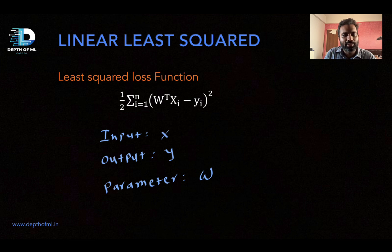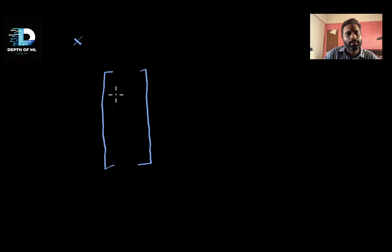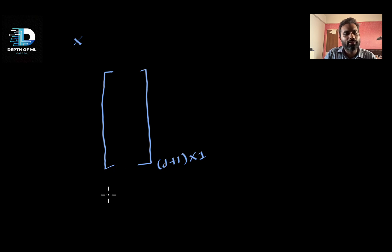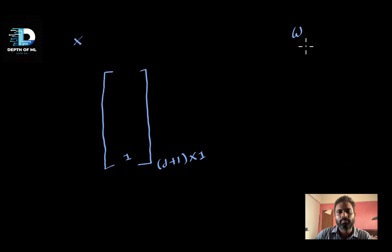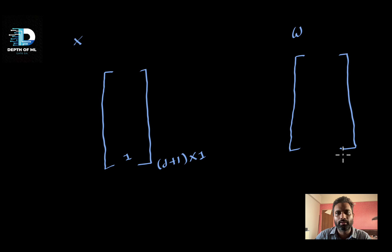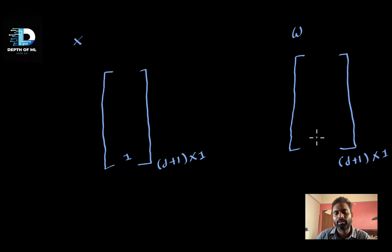Now let's revise the dimension of each entity. X subscript i is the ith data point, represented by a column vector of dimension d+1 rows and one column. Please note that we are working with the augmented feature vector, so the last entry in this column vector will be one.